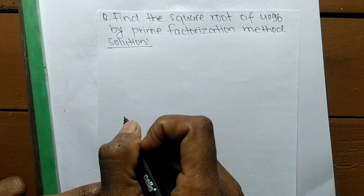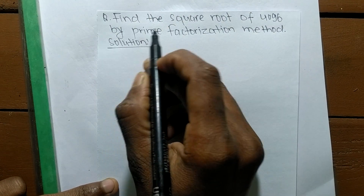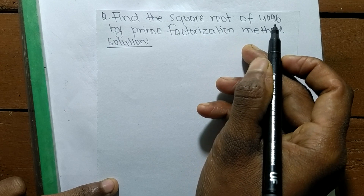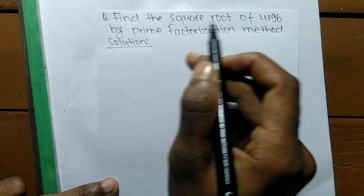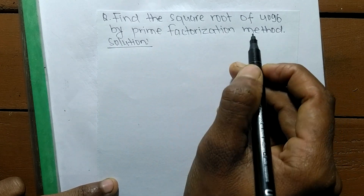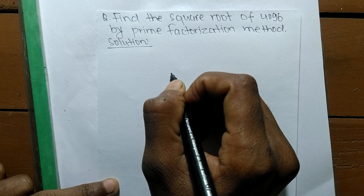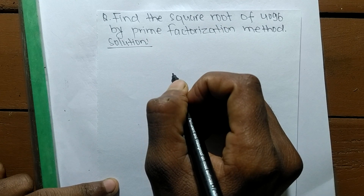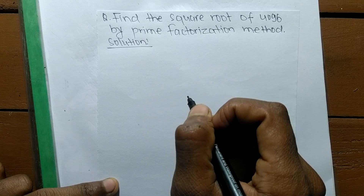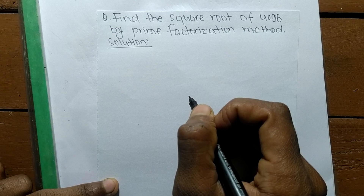Today in this video we shall learn to find the square root of 4096 by the prime factorization method. To find the square root by prime factorization, first we have to find out the prime factors of the given number.